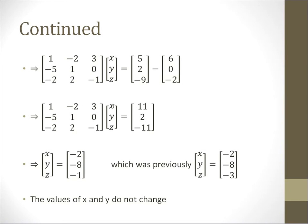We can again get the values of X, Y and Z. Look, we have got the value of X to be -2, Y to be -8, and Z to be -1, which was previously -2, -8, and -3. So the values of X and Y did not change, only the value of Z changed.